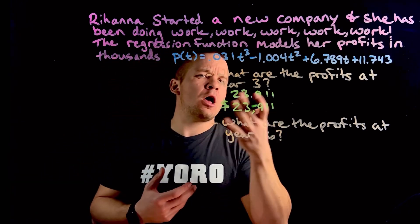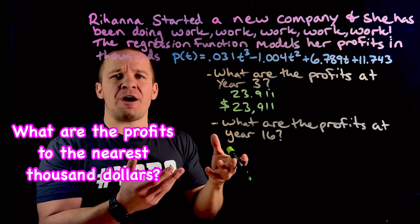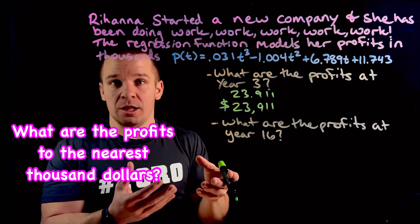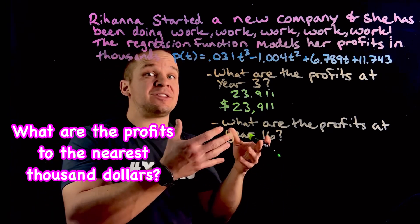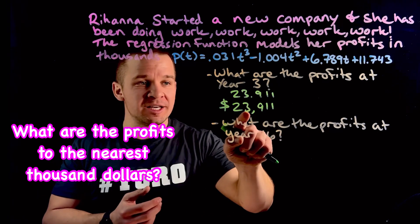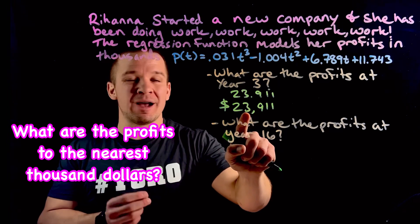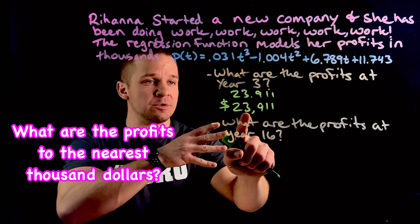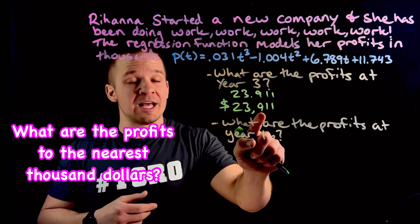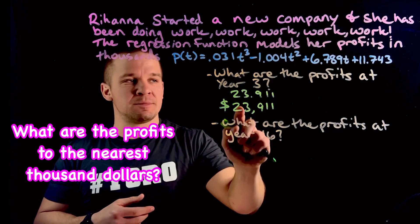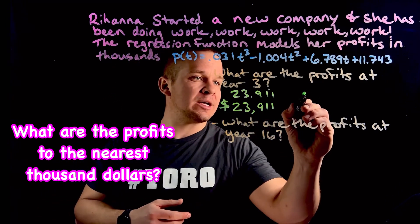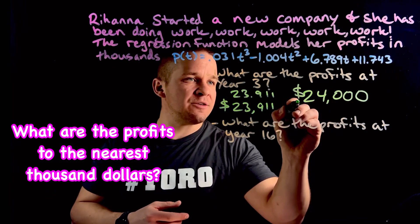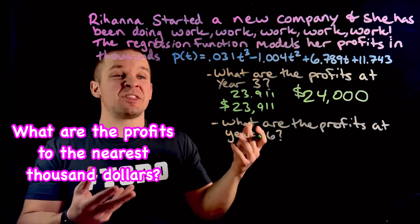Now, what if I said what are the profits to the nearest thousand dollars? To the nearest thousand dollars — well, that'd be this guy right here. Not nearest thousandths, which is decimals, but nearest thousand. So I look at that nine, that rounds up that three. So I could say $24,000 if I was writing to the nearest thousand.